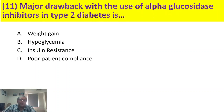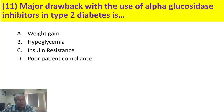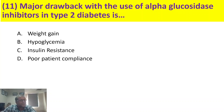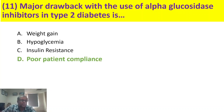Major drawback with the use of alpha-glucosidase inhibitors in type 2 diabetes. By inhibiting this enzyme, these drugs prevent carbohydrate absorption from the GI tract. As a result, the unabsorbed carbohydrate leads to flatulence, GI discomfort, and various other side effects, making patient compliance very poor. It will not lead to weight gain, hypoglycemia, or insulin resistance. So the answer is D, poor patient compliance.